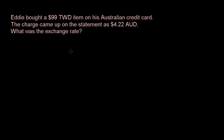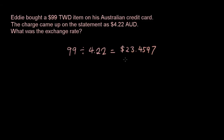Well all you've got to do is 99 divided by 4.22, put that in your calculator, and you get 23.4597 Taiwanese dollars per Australian dollar (AUD).